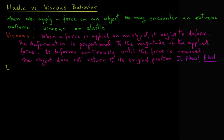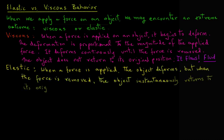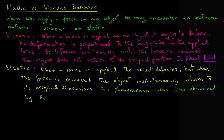In case of elastic, when a force is applied, the object deforms. But when the force is removed, the object instantaneously returns to its original dimension. This phenomenon was first observed by Robert Hooke and this phenomenon is also expressed as Hooke's Law.